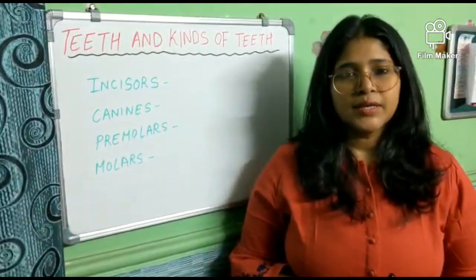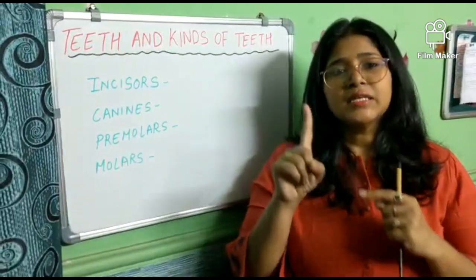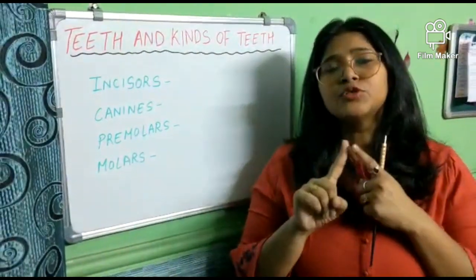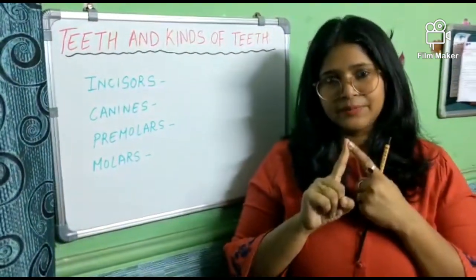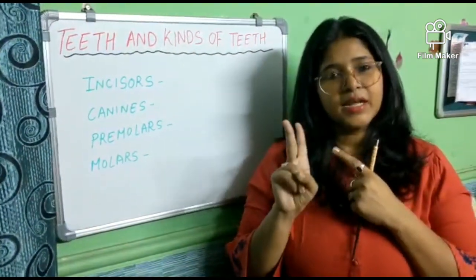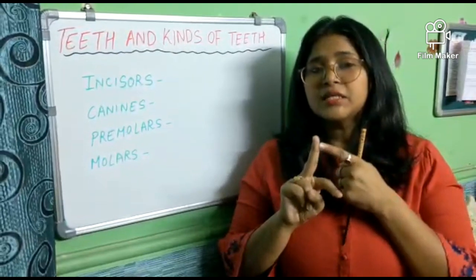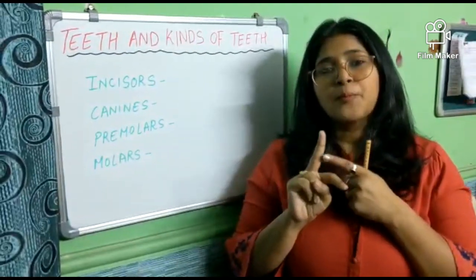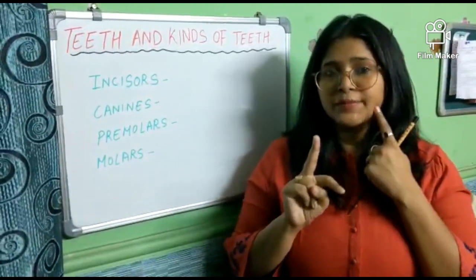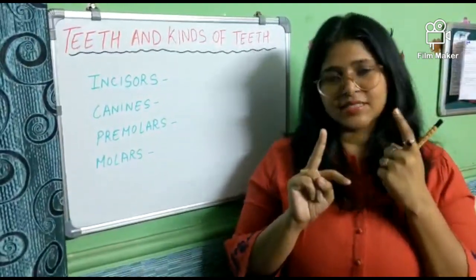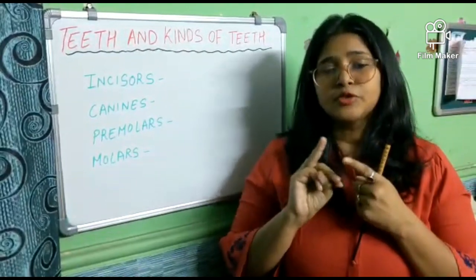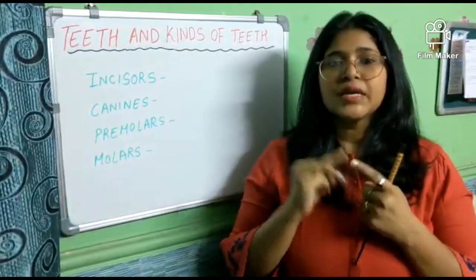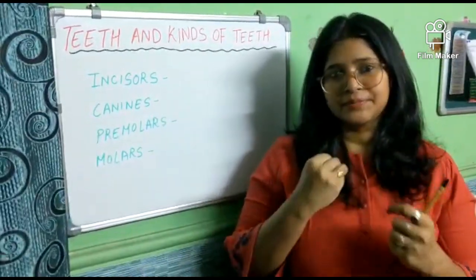So these are the three basic importances of our teeth. What are they? First, teeth help you to chew your food nicely. Second, teeth give a proper shape to your face. Third, teeth help you to speak clearly.